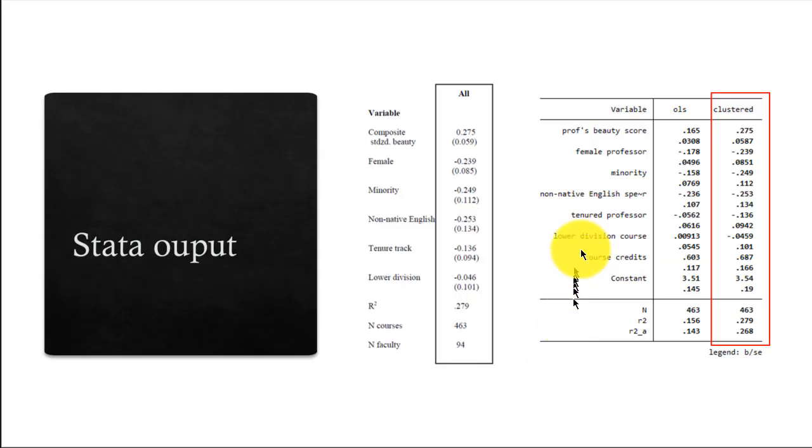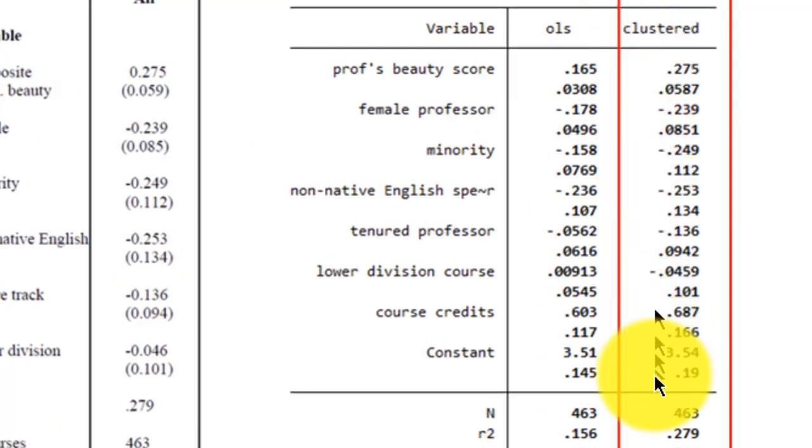What I have here is the output. Notice that I have the ols output and the clustered output from the est tab command. What is of interest is what is enclosed in this red colored box. Notice that under clustered standard errors, the output from Stata is identical to the output that was produced in the paper by Professor Hamermesh.